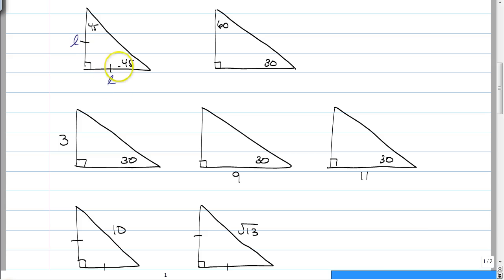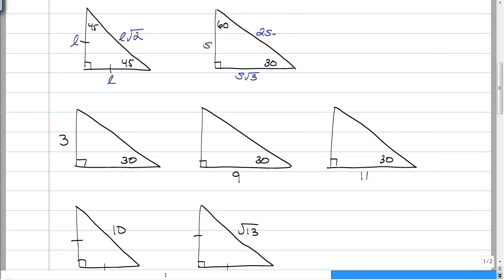I always said that 45-45-90 uses the pattern L-L-L root 2, for leg-leg-leg root 2. And for 30-60-90, I always said that this was the short side, the short side root 3, and two times the short side. You might have had X, X root 3, 2X — I use legs for isosceles triangles and S for the short side: short side, short side root 3, and 2S for two times the short side. Either way, it's up to you.